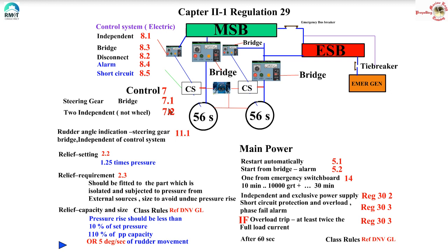Regulation 29.7.1 says the steering gear should be able to be operated from the bridge. If you have two main steering gears then two control systems should be provided and they should be independent — an exception can be made for a telemotor system. However, if a ship is a tanker above 10,000 GRT, two control systems must be provided. Also, rudder angle indication as per Regulation 11.1 should be independent of the control system.